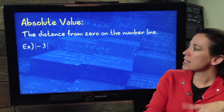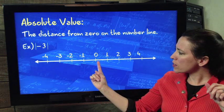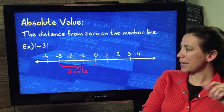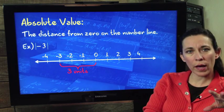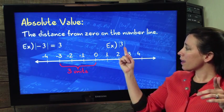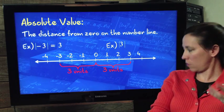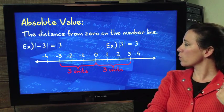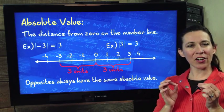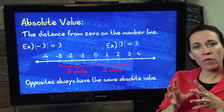Let's take a look at this example. If we've got the absolute value of negative 3, notice how far away negative 3 is from zero on the number line. It is exactly 3 units away. That's why the absolute value of negative 3 is 3. Likewise, the absolute value of positive 3. Positive 3 is 3 units away from zero. So, the absolute value of 3 is also 3.